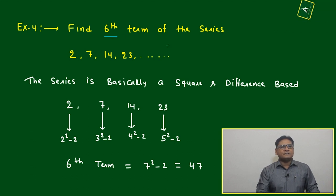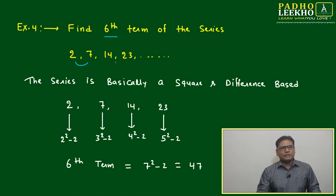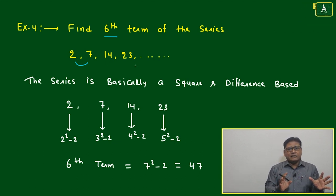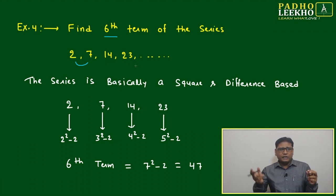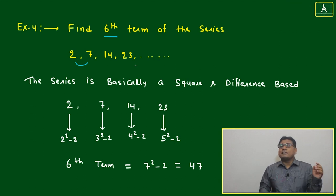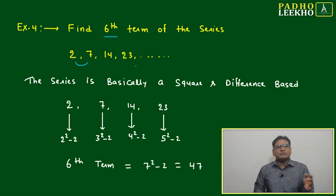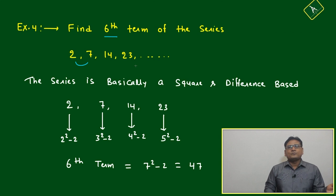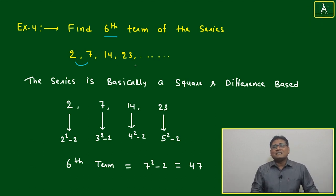Find the sixth term of the series 2, 7, 14, 23. What is happening here? We are not getting any idea how 2, 7, 14, and 23 are interrelated. If we try to bifurcate based on odd-even, that is also not possible. One is even, then odd, again even, odd. But what is the difference and how it will be interrelated arithmetically? That we have to find.